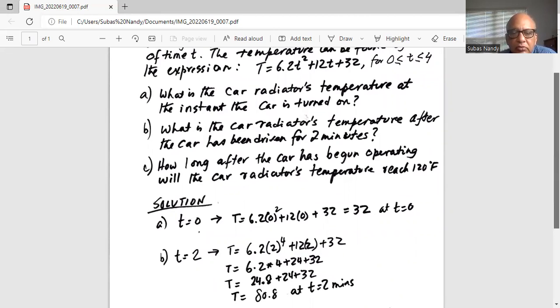So it will be 6.2 times 2 to the power of 2 (not times 4, as I've written it wrong here), plus 12 times 2, plus 32. That's 6.2(2²) + 12(2) + 32.